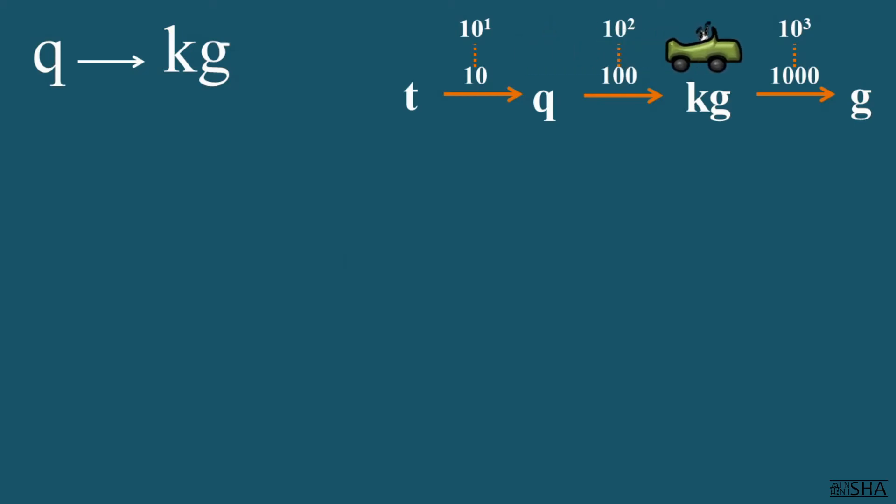Convert six metric centenars to kilograms. So six needs to be multiplied by ten to the second power, and this is six hundred kilograms.